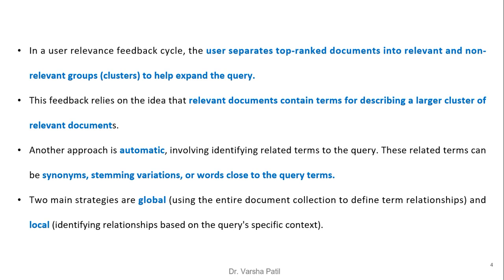In the user relevance feedback cycle, the user separates the top-ranked documents into relevant and non-relevant groups — that is a cluster — to help expand the query. This feedback relies on the idea that relevant documents contain terms describing a large cluster of relevant documents. Another approach is automatic, which involves identifying related terms to the query. These related terms can be synonyms, stemming variations, or words close to the query terms. Two main strategies exist: global, where the entire document collection is used to define term relationships, and local, which identifies relationships based on query-specific context.